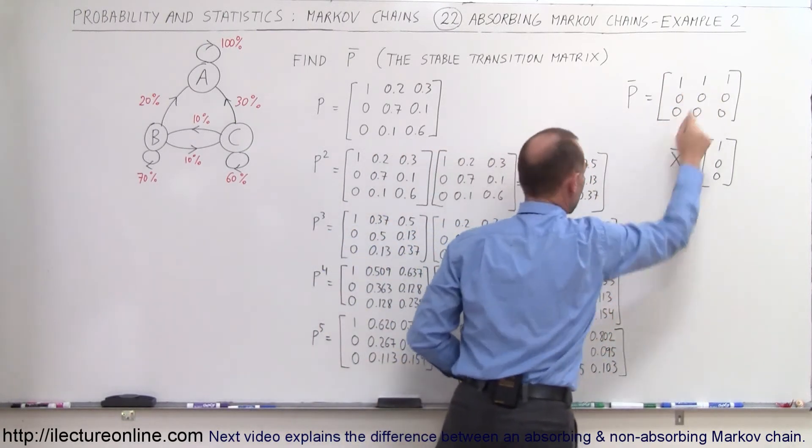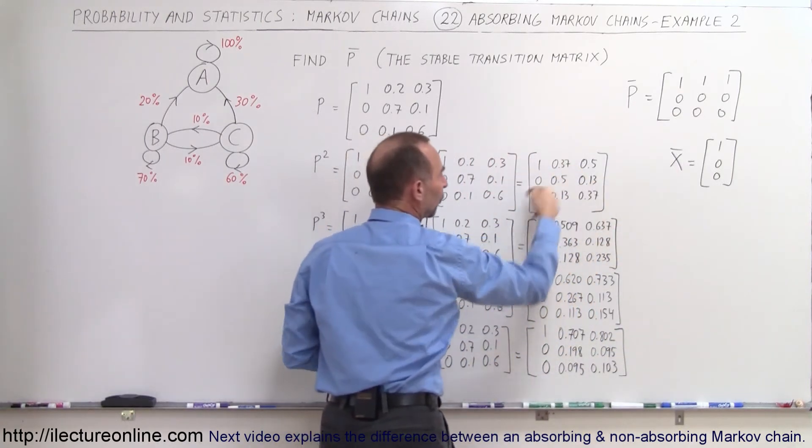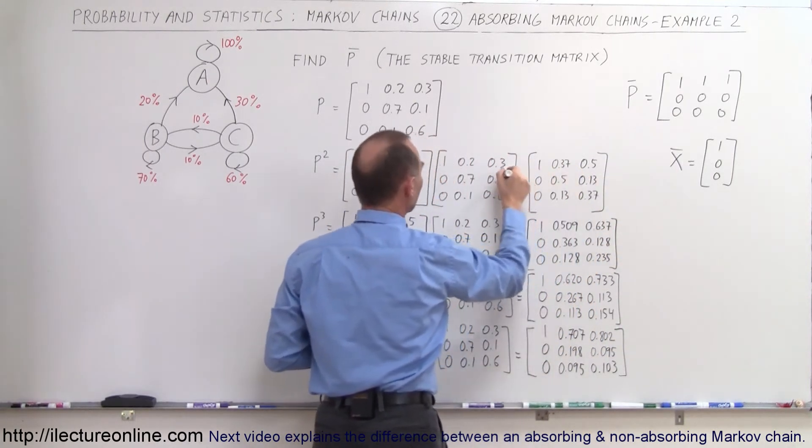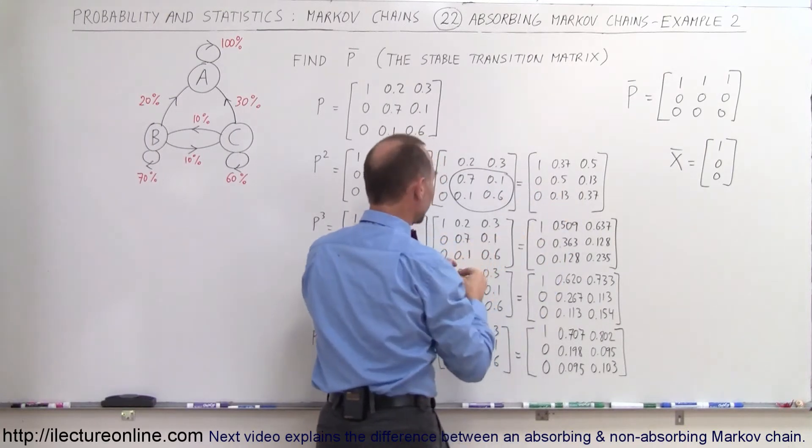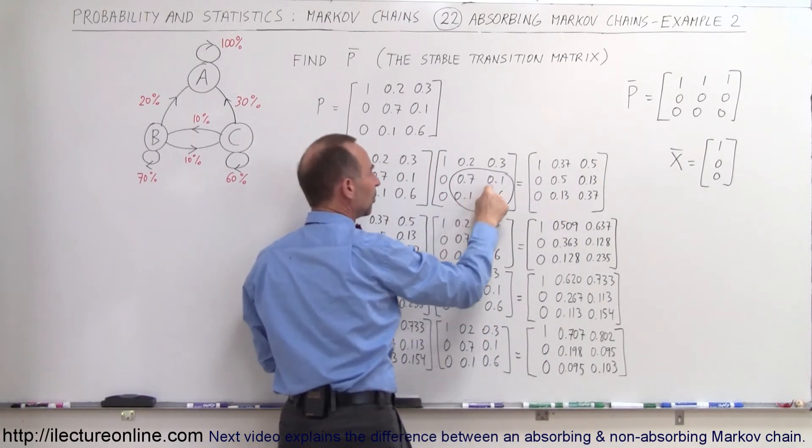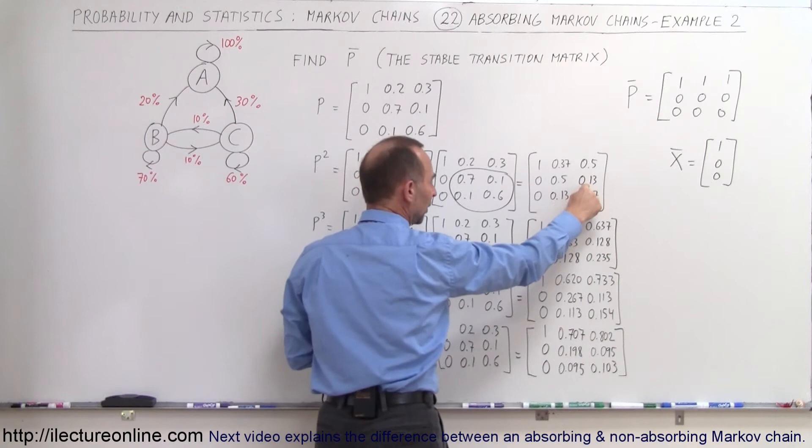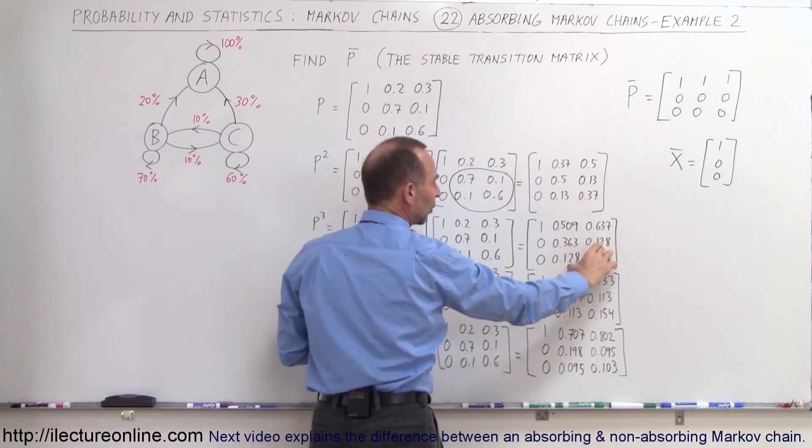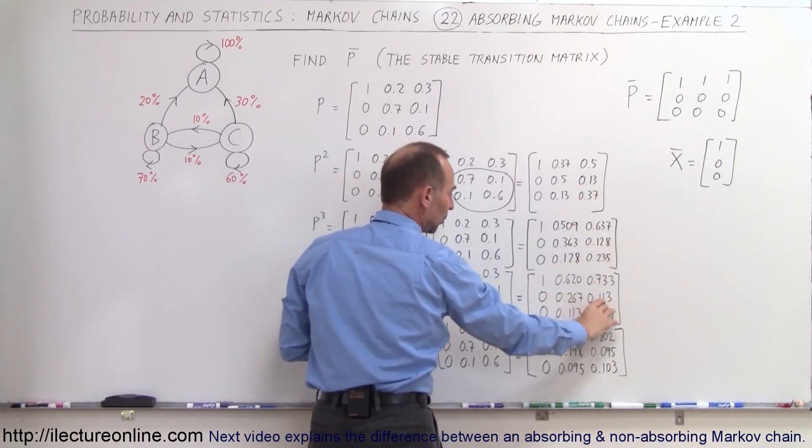Also notice that these other four terms, these right here, will become smaller. Now initially we go from 0.1 to 0.1 to 0.13, 0.13, but notice then we go to 0.218 to 0.113 to 0.095, and so they begin to get smaller...